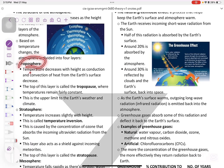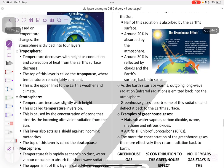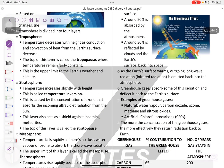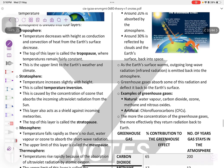Troposphere: temperature decreases with height as conduction and convection of heat from the earth's surface decreases. The top of this layer is called tropopause. So troposphere and then tropopause. Stratosphere, stratopause. Mesosphere, mesopause. Then we got stratosphere. In stratosphere, you have your ozone layer. This is an important point to remember.